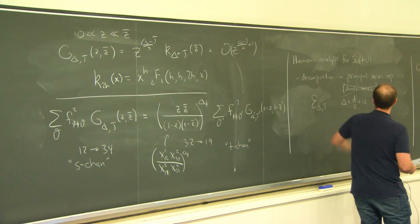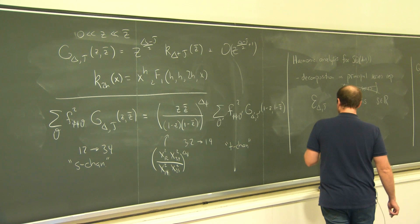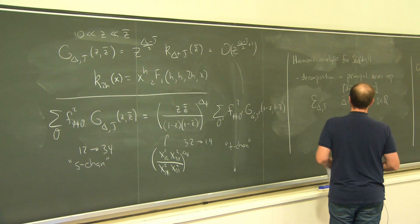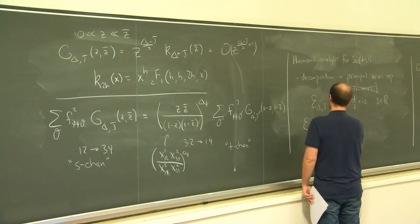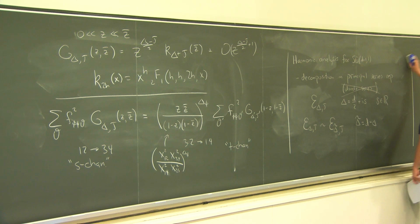One of the most important things about these principal series representations is that there's an equivalence between a principal series representation and its so-called shadow representation. Here delta-tilde will always mean d minus delta. By equivalence of representations, I mean there is a conformally invariant, invertible linear map between these representations, called the shadow transform. The shadow transform acting on some operator is an integral transform where you take that operator and integrate against the two-point function in a conformally invariant way.